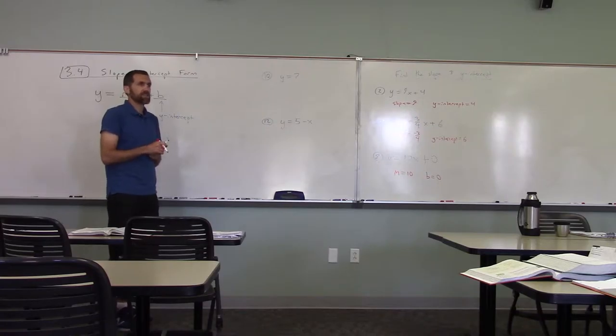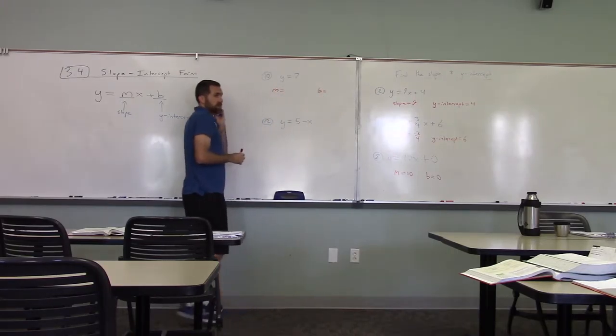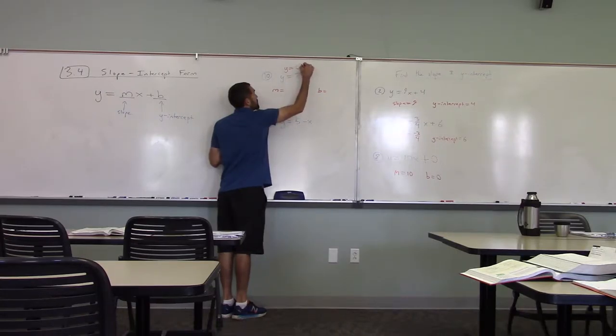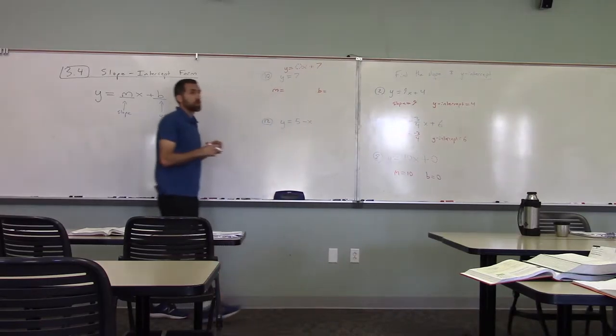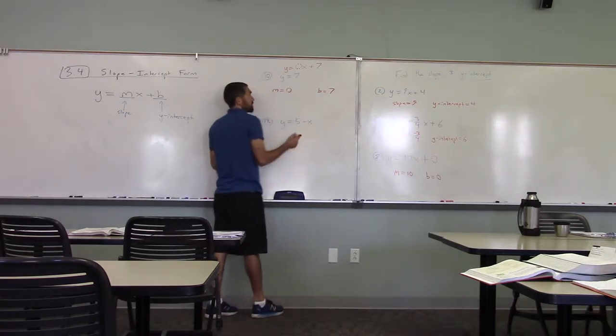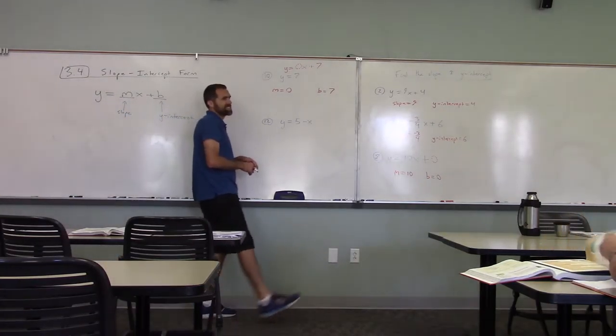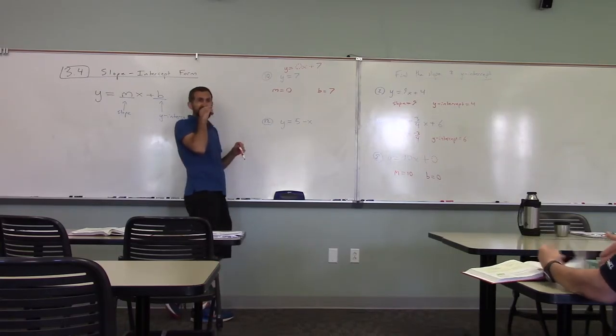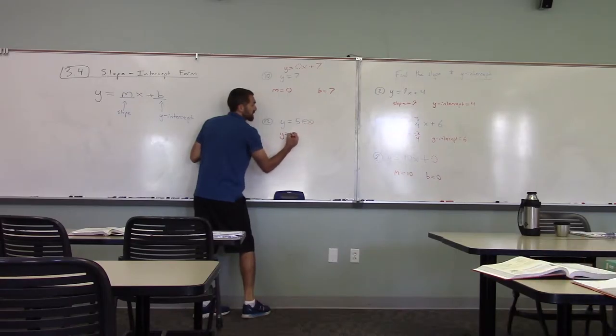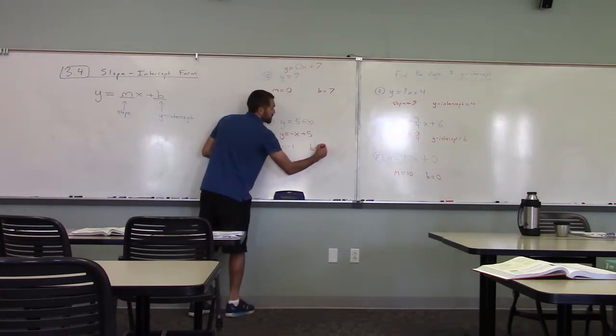How about number ten? y equals seven. Slope is zero. Because you could rewrite this as y equals zero x plus seven. So, slope is zero and b is seven. Instead of 12, first thing I would do is rewrite it. Always write the variable first. This is y equals negative x plus five. Now it's easy. So, the slope is negative one, and the y-intercept is five. And then you can immediately graph it.